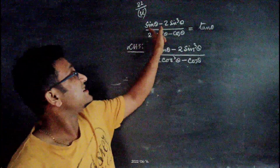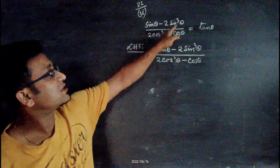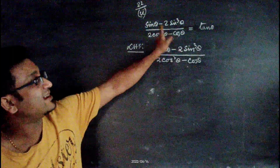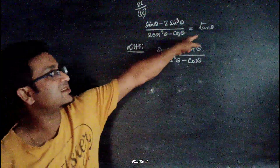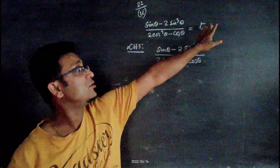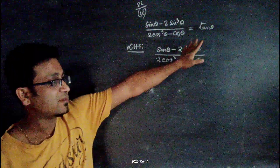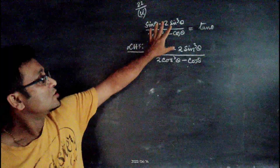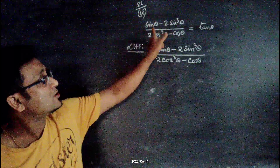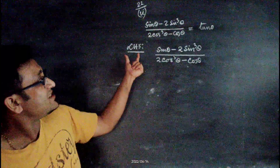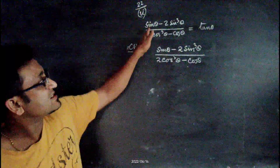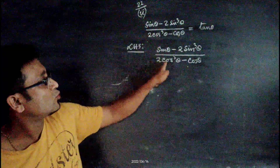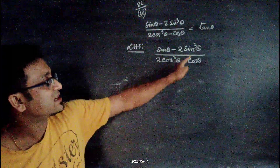Second part of question 22: (sinθ - 2sin³θ) / (2cos³θ - cosθ) = tanθ. We know tanθ = sinθ/cosθ. The expression is already in terms of sinθ and cosθ, so we have to take common factors first from the numerator and denominator.